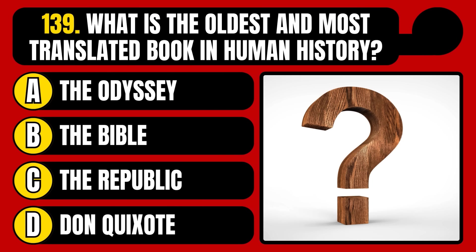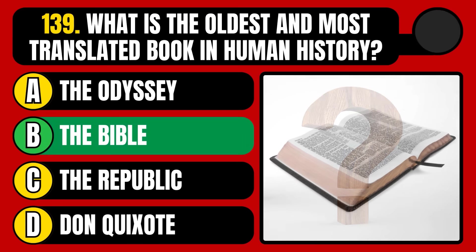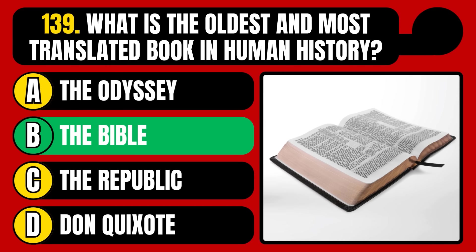What is the oldest and most translated book in human history? The Odyssey, the Bible, the Republic, or Don Quixote? The correct answer is option B, the Bible.